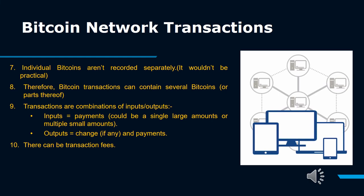Locking and Unlocking Scripts: A Bitcoin transaction contains both locking and unlocking scripts. The locking script typically contains the Bitcoin address, whereas the unlocking script usually contains a digital signature created from the user's private key. The unlocking script is used to verify the transaction. See digital signature, Bitcoin node, Bitcoin, and blockchain. There can be transaction fees.